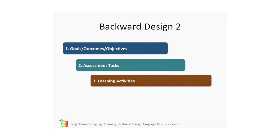To sum up, there are three steps in backward design. First, we define goals, outcomes, or objectives. Then we define assessment tasks so that we know whether students have achieved the outcomes. Then we develop learning activities to help students be successful on these assessment tasks and show that they have achieved the outcomes.